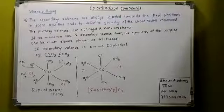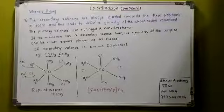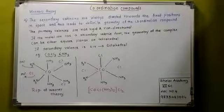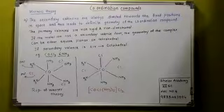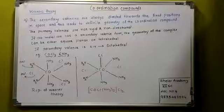Now as Werner said that metals have 2 types of valences - the primary valence and the secondary valence. Primary valence is ionizable, secondary valence is non-ionizable. The primary valence corresponds to the oxidation state, secondary valence corresponds to the coordination number.